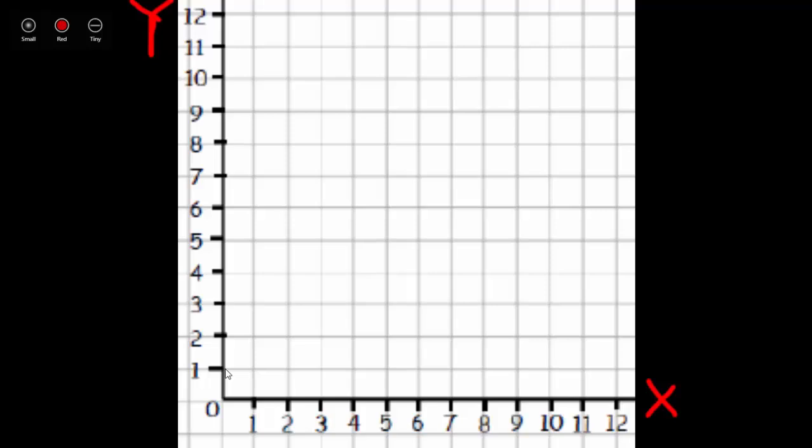Now, an ordered pair is a set of numbers that allows you to plot a point on a coordinate grid. Ordered pairs need a couple things. First of all, they're surrounded or inside a set of parentheses just like this.